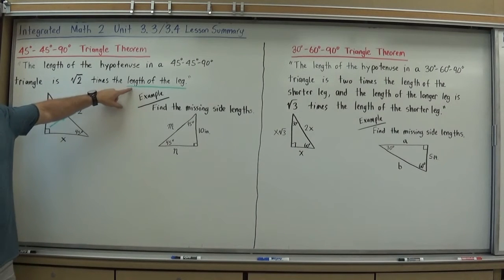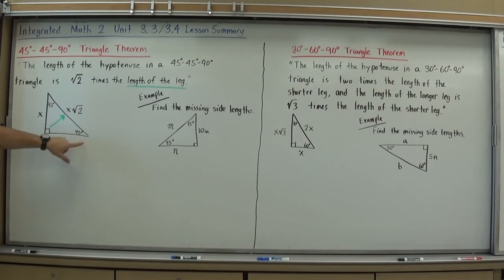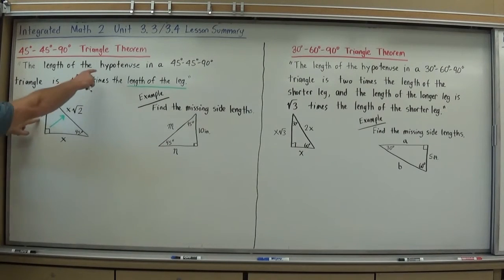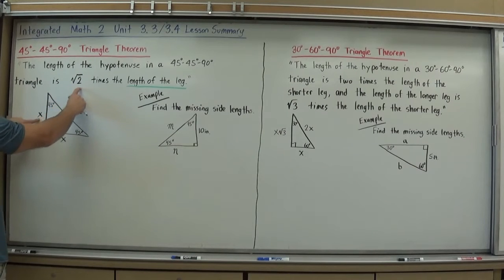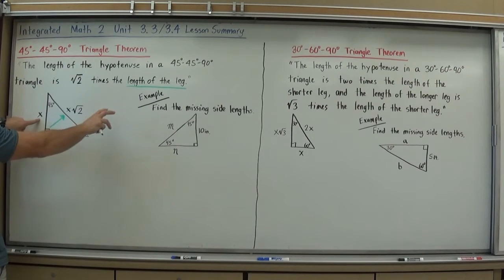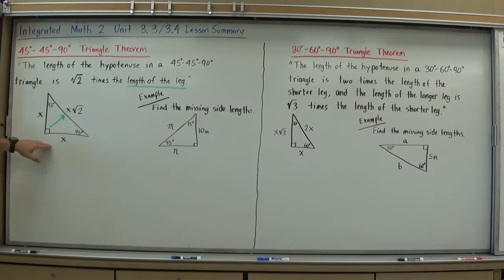Make the leg length x. Here's a leg — I'm going to call it x. Because it's a 45-45-90, the sides opposite the 45s have to be the same, so both legs are x. My statement says the hypotenuse is root 2 times the length of the leg; if the leg is x, then the hypotenuse is x times root 2, written as x√2. So the ratio to memorize is x, x, x√2 for a 45-45-90.